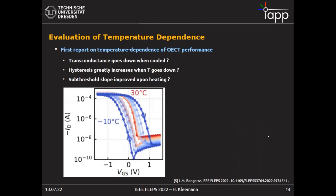Here is the result of our very first temperature-dependent measurement. You can immediately see that if you cool down the system, the hysteresis greatly increases — not very surprising, but there's a lot of physics behind this. We also see that the on-current goes down, which we can explain. And one very surprising thing: if you heat the device, the sub-threshold slope gets steeper.